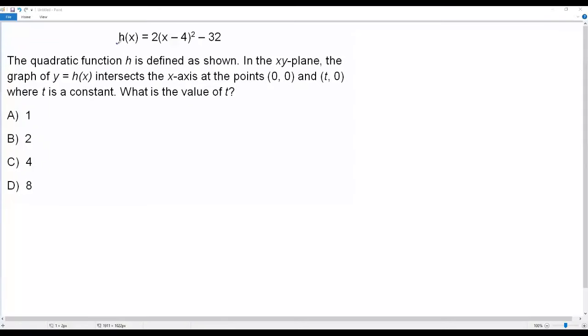Here we have an SAT math question. There is a quadratic function h(x) = 2(x - 4)² - 32 given over here.